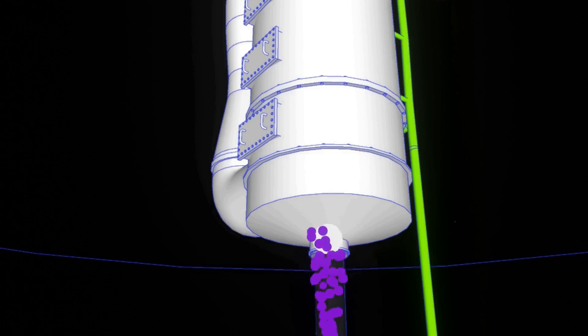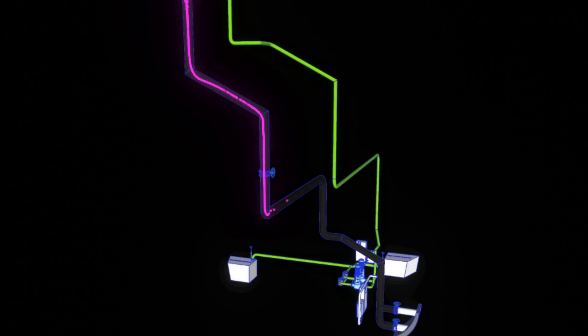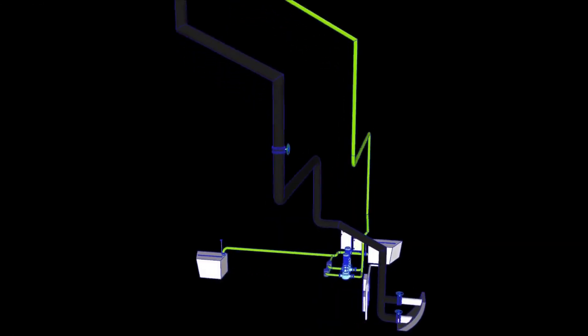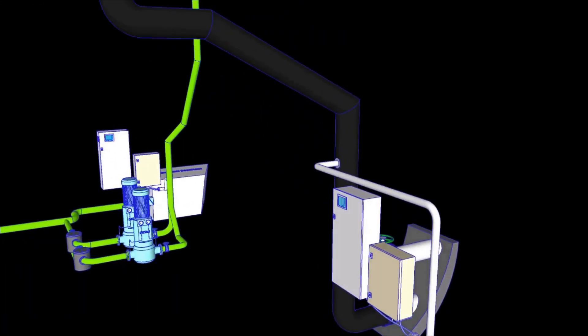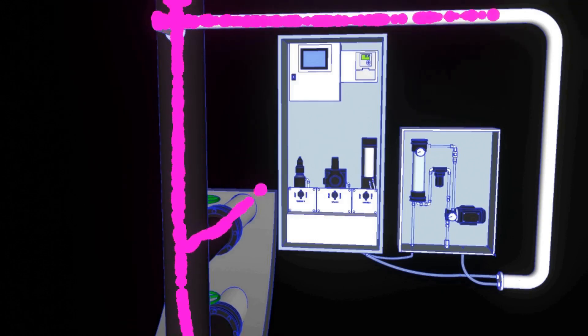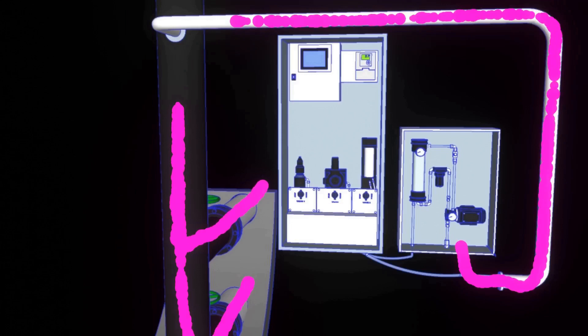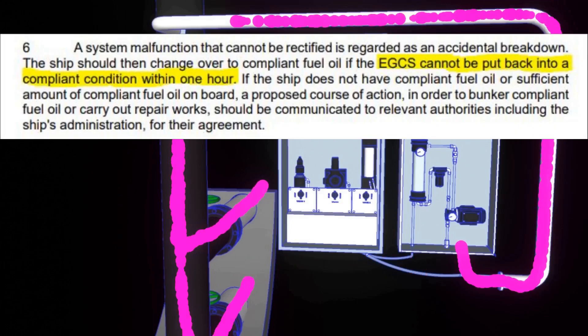All wash water from the main chamber and venturi is being drained from the bottom part of the scrubber. The drain line is made up of glass reinforced epoxy which is highly resistant to corrosion. Before the wash water goes overboard, it is then again measured for the values of pH, PAH, and turbidity.